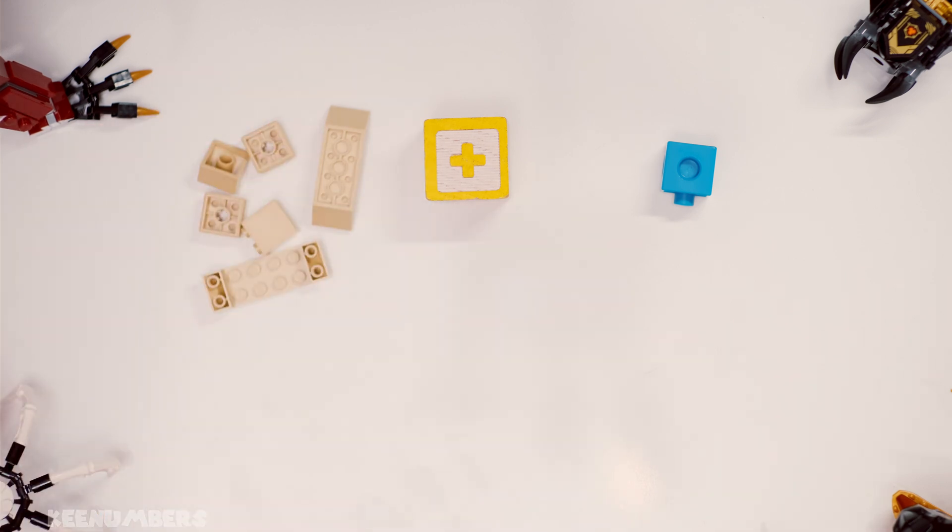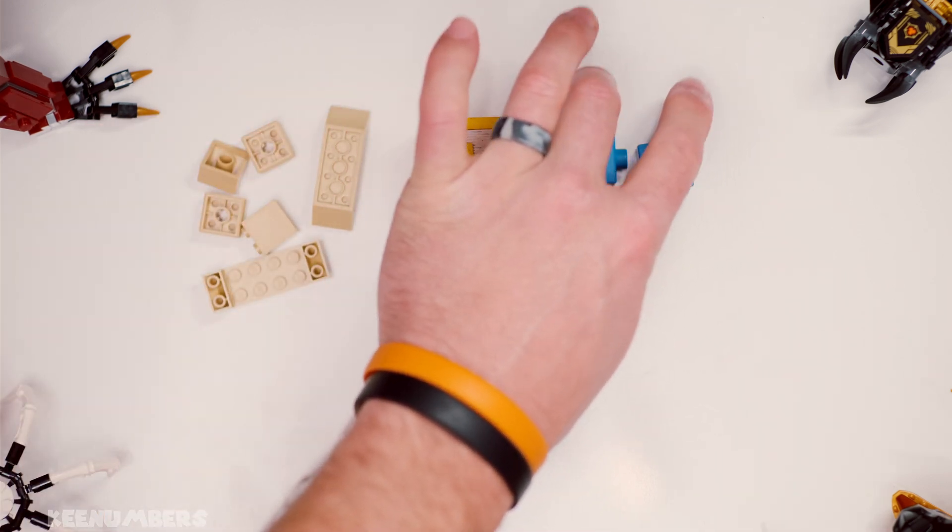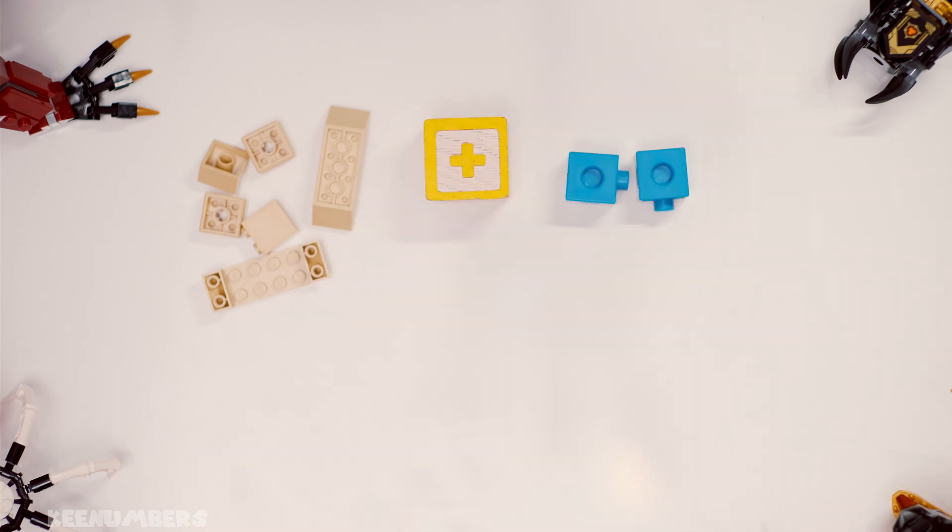You have six tan pieces and you have two blue pieces. That's what's left over.